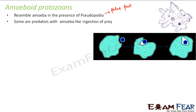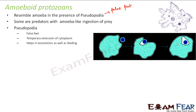The cytoplasm extends and the prey is captured inside the amoeba. This process is known as phagocytosis. These protozoans ingest their prey in this fashion, which is why they are known as amoeboid protozoa. They share two similarities with amoeba: the presence of pseudopodia and ingestion of prey. Pseudopodia is a temporary extension of cytoplasm that helps in locomotion as well as feeding, as you can see in this picture.